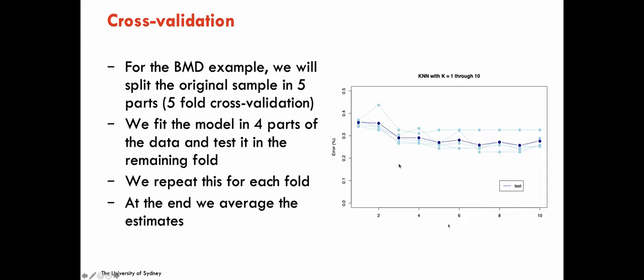Going back to our example with five-fold cross-validation, I fit the model on four parts and test on the fifth, repeating this five times. I obtain five lines in light blue for the different numbers of neighbors. Then I average across the five repetitions. This is a more stable evaluation of model performance because it accounts for variability in how I can split the data.